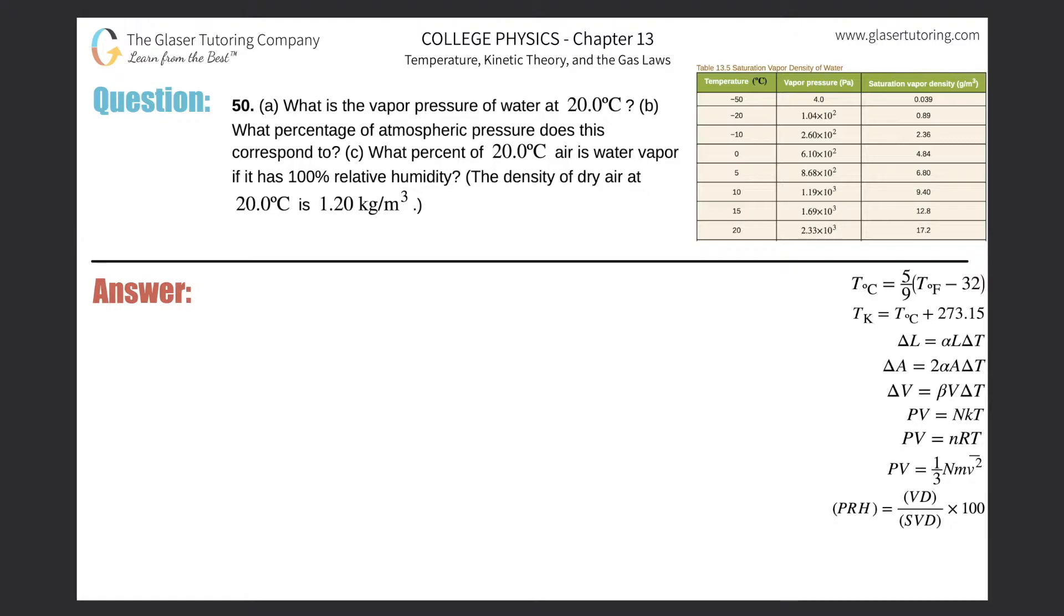Number 50, letter A: What is the vapor pressure of water at 20 degrees Celsius? This one's actually really easy—you just have to look it up. The book doesn't go into how to actually calculate it, so this is purely looked up. If you go to the table in the text, the answer is 2.33 times 10 to the third pascals. That's the vapor pressure of water at 20 degrees Celsius.